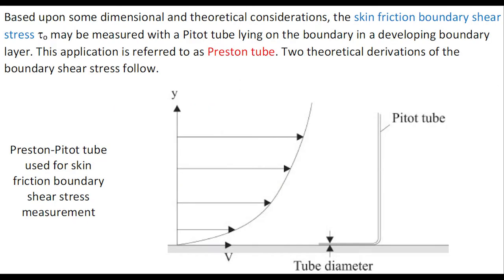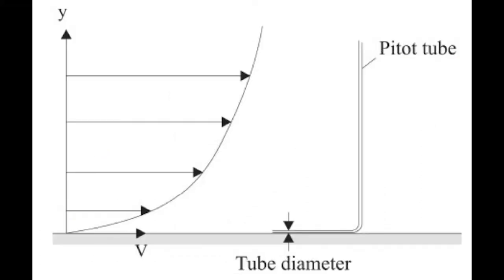Based upon dimensional and theoretical considerations, the skin friction boundary shear stress may be measured when the Pitot tube is lying on a boundary in a developing boundary layer. This application is referred to as a Preston tube. When a Pitot tube is lying on the wall, it measures the velocity at a distance normal to the wall roughly equal to half of the Pitot tube outer diameter.